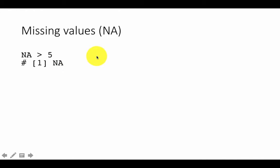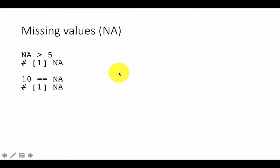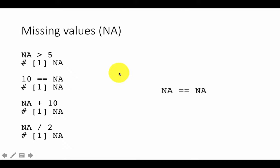In general, any logical operation you perform with NA will produce NA as the result, because you don't know the value. Is 10 equal to unknown? Don't know. What is 10 plus unknown? Don't know. What is 10 unknown divided by 2? Don't know. Most interesting of all, is NA equal to NA? Given that both are unknown, the answer has to be NA.